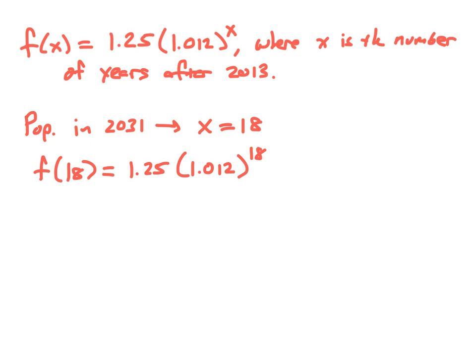So the population in 2031 will be f(18) = 1.25 times 1.012 raised to the 18th power. Because of the decimals, we use a calculator to compute this value, and we get approximately 1.549. We need to remember this number is in billions, so the population is about 1.549 billion — a little more than 1.5 billion people in India, which should be the approximate population in 2031.